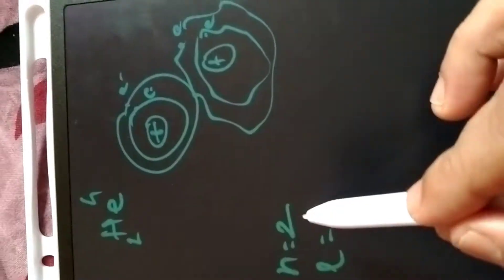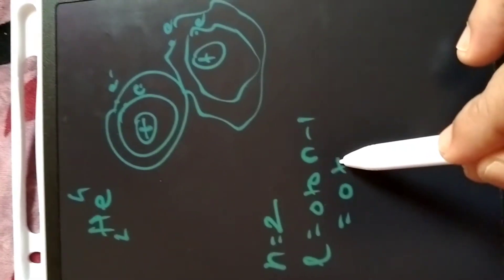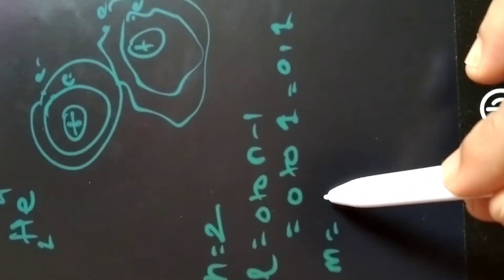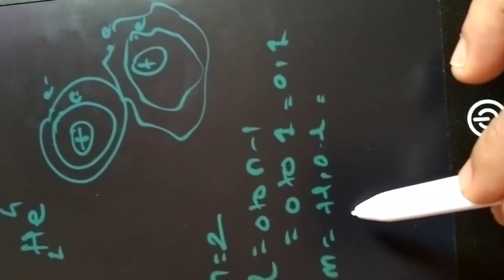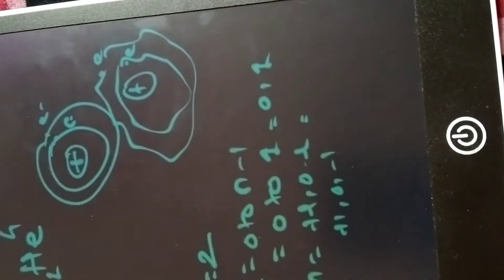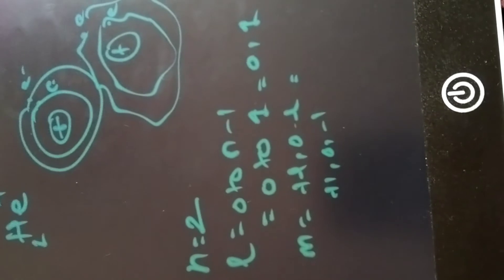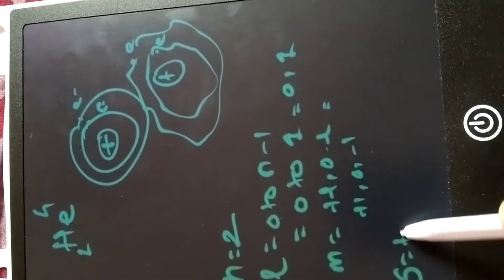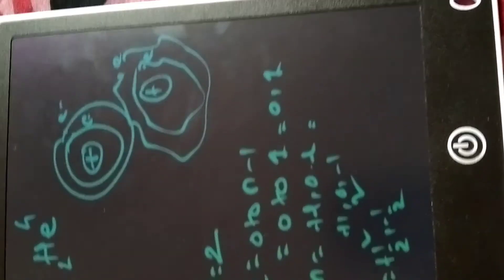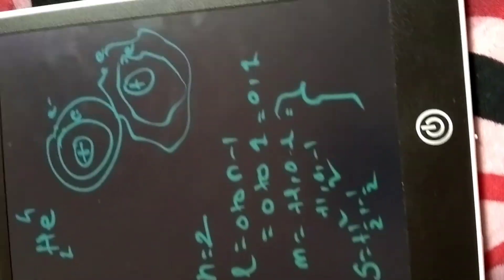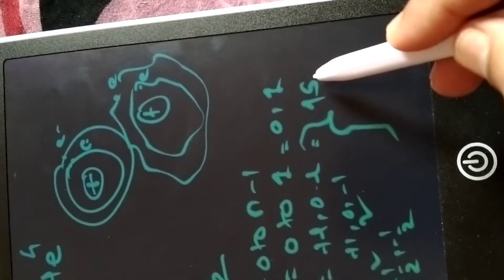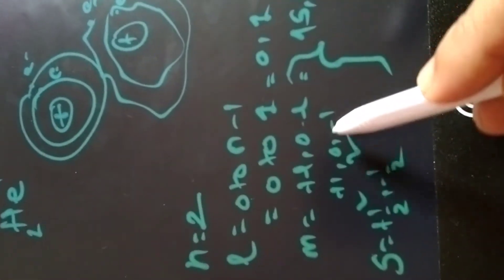The orbital quantum number l ranges from 0 to n minus 1, which means 0 to (2-1) = 1, so l has values 0 and 1. For the magnetic quantum number, values range from +l to zero to -l: +1, 0, and -1 — giving three values. So there are three possible orientations for these two electrons. The spin quantum number will be either +1/2 or -1/2 for these two electrons — one clockwise and one anticlockwise.